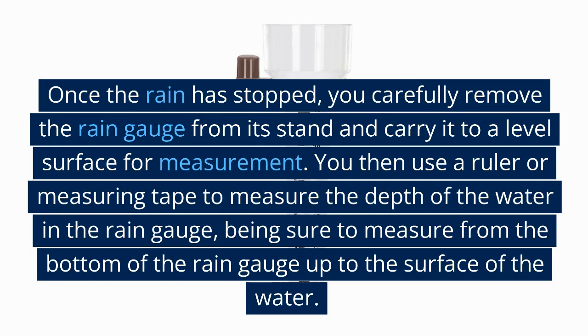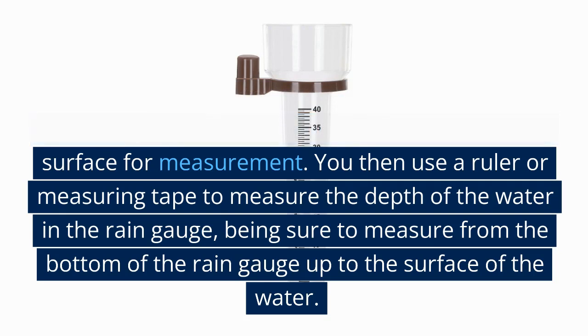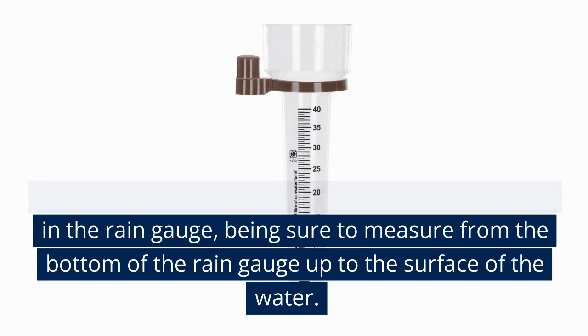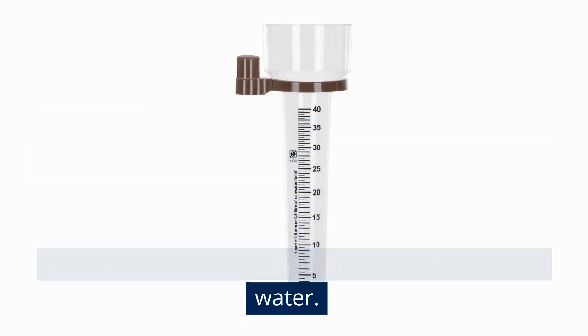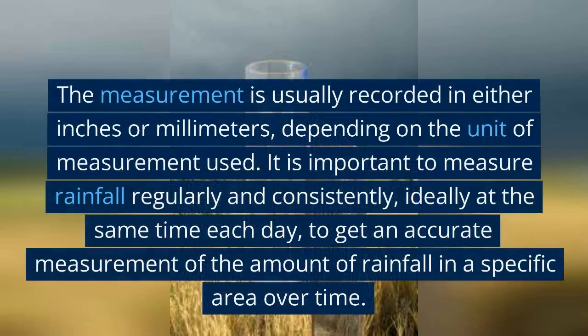You then use a ruler or measuring tape to measure the depth of the water in the rain gauge, being sure to measure from the bottom of the rain gauge up to the surface of the water. The measurement is usually recorded in either inches or millimeters, depending on the unit of measurement used.